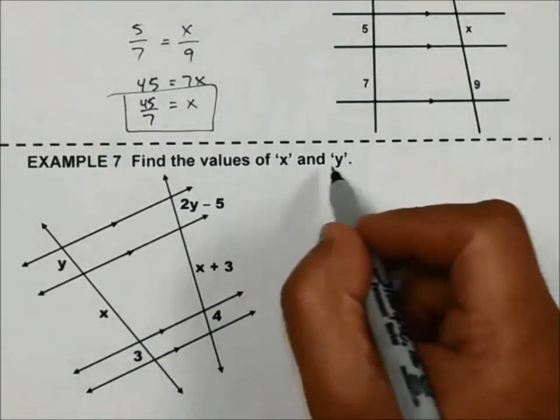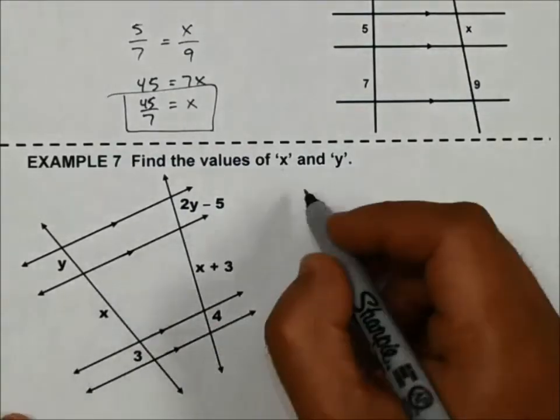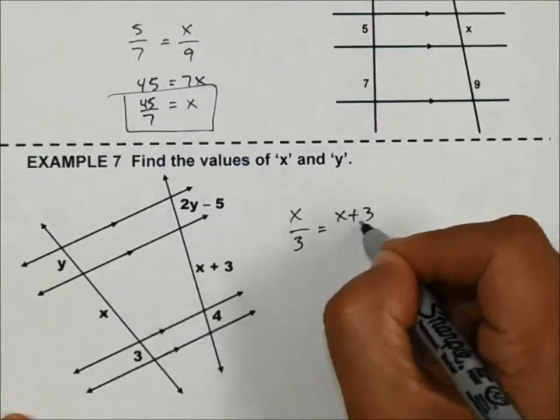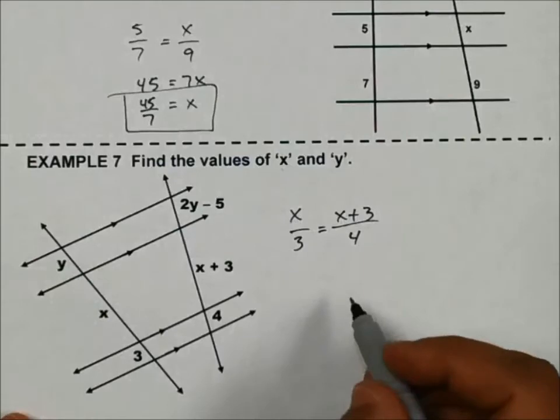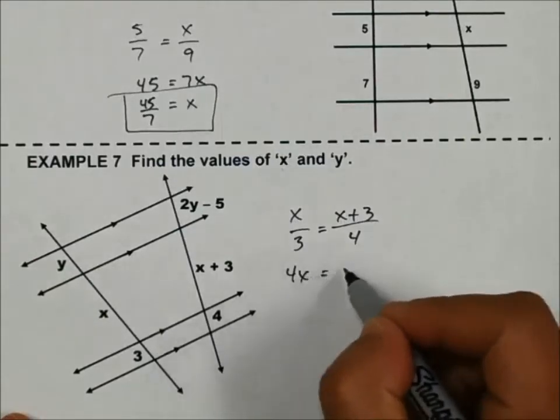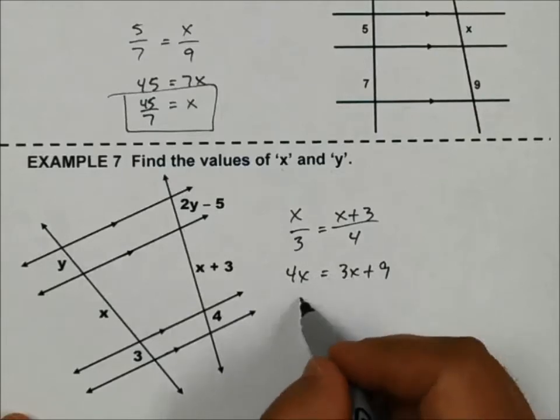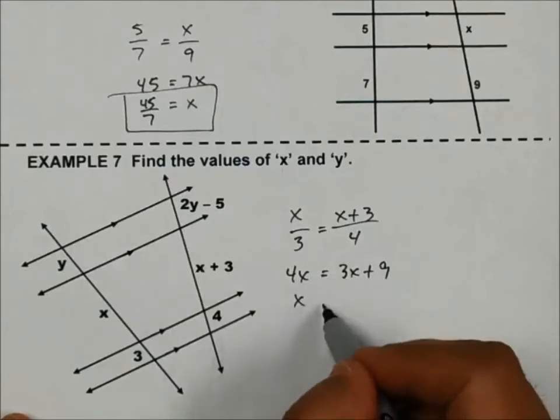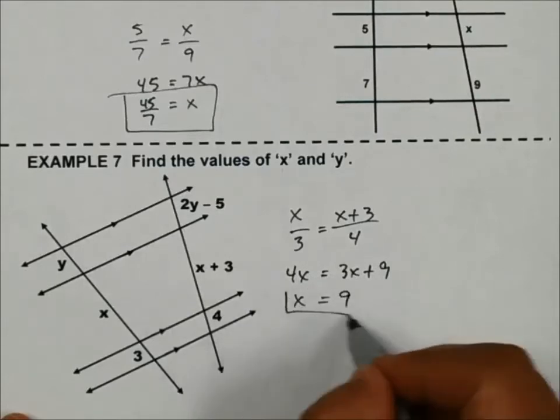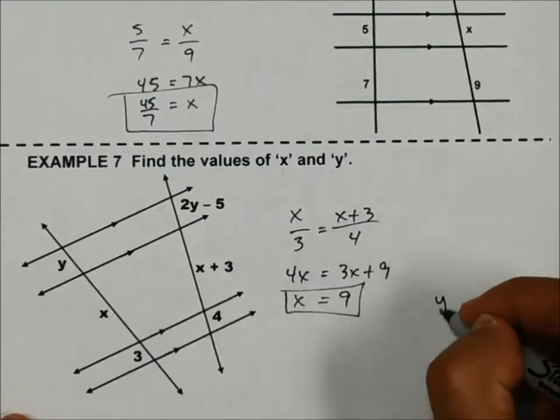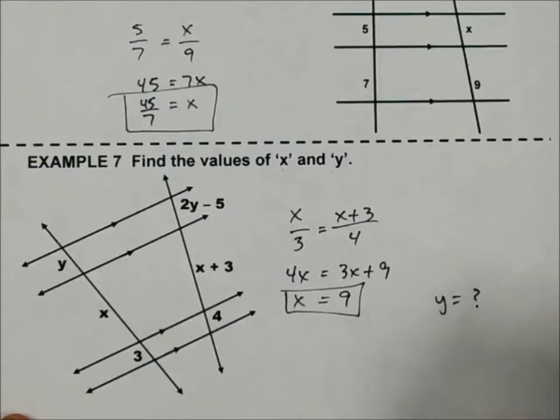And I will do number 7 with you. Actually, I think I'm going to do just X and I'll let you solve for Y. So let's do this as a proportion. X over 3 equals X plus 3 over 4. So that gives me 4X equals 3X plus 9. Subtract the 3X, that's going to give me X on the left and 9 on the right. So X is 9. And I'm going to leave it up to you to figure out what Y is.